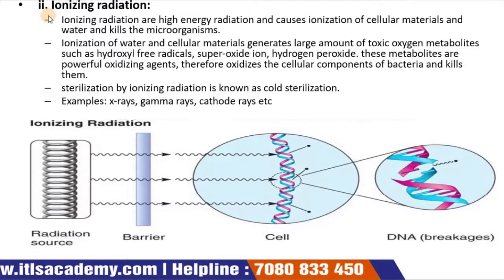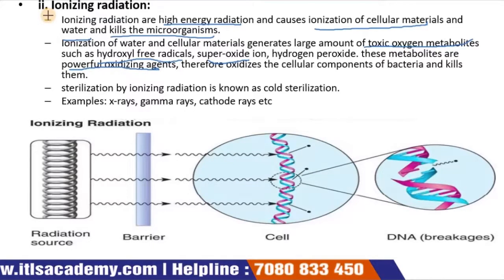Ionizing radiation includes X-rays, gamma rays, and high-energy electron beams. It is strong enough to pass into the cell, altering molecular structure and damaging cell components. Ionizing radiation causes ionization of cellular materials and water, generating large amounts of toxic oxygen metabolites such as hydroxyl free radicals, peroxide ions, and hydrogen peroxide — very powerful oxidizing agents that oxidize cellular components of bacteria and kill them.